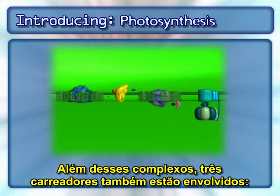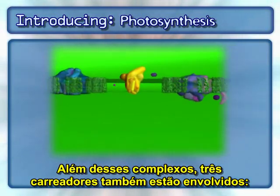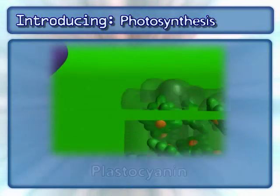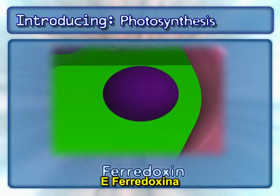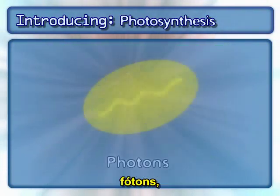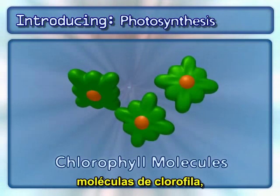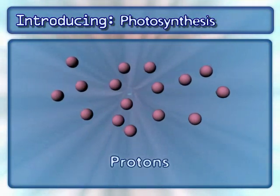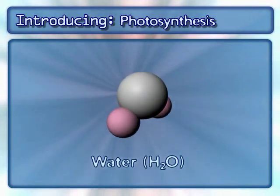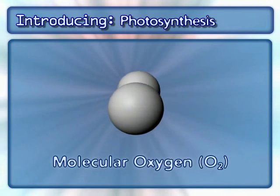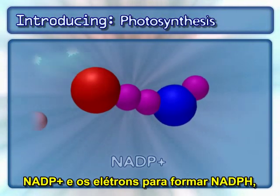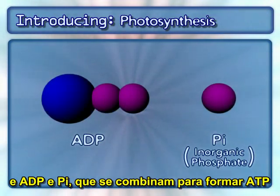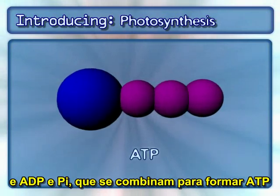In addition to the complexes, three mobile carriers are also involved: plastiquinone QB, plastocyanin, and ferredoxin. Other key components include photons, chlorophyll molecules, protons, water, molecular oxygen, NADP and the electrons to form NADPH, and ADP and PI, which combine to form ATP.